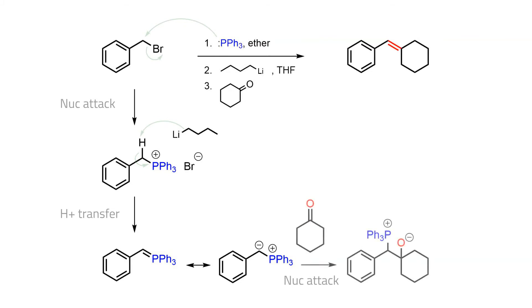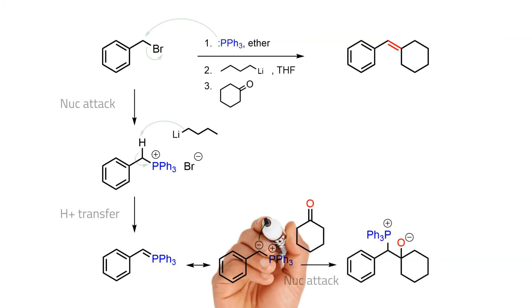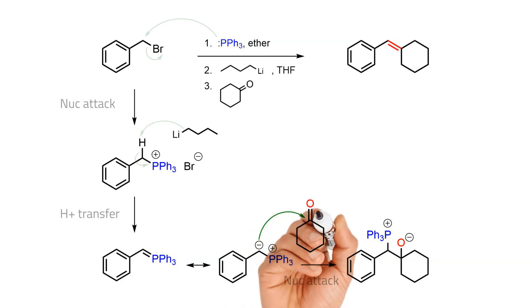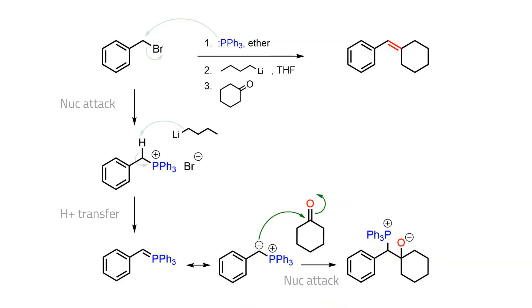The significant amount of electron density on the alpha carbon makes it nucleophilic, so the introduction of an aldehyde or a ketone induces nucleophilic attack and the formation of a beta ion species with a new carbon-carbon single bond.